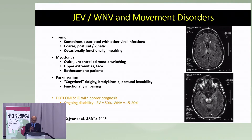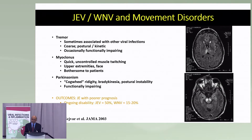On the right-hand side on those MRI scans, there's a high-signal-intensity lesion in the thalami and also in the substantia nigra. These areas are preferentially targeted by these viruses. Why that is the case still remains a mystery.